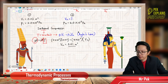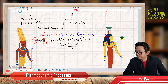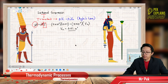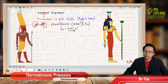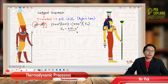So that's our final volume — V2 is 0.01 meter cube. Just use Boyle's Law for the isothermal process. That's our final volume. Let us now move on to question 4.